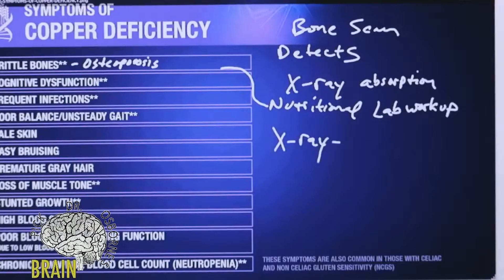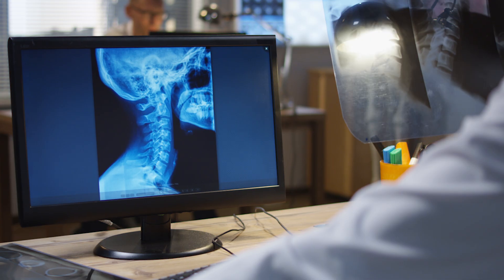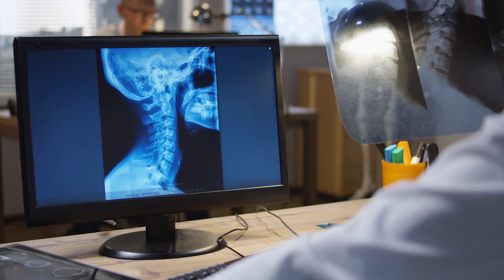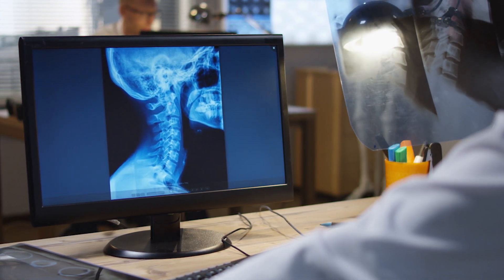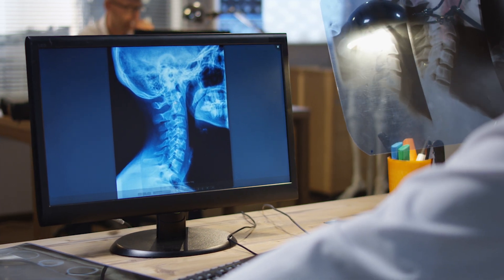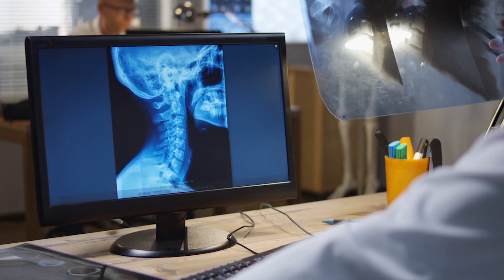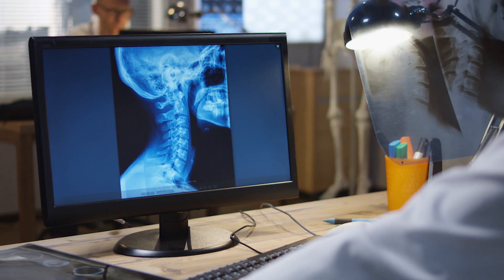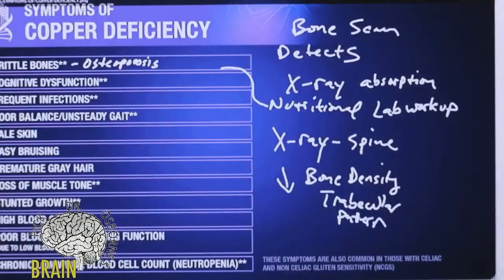X-rays of the spine can sometimes show reduced bone density. What doctors will look at on an x-ray is called the trabecular pattern. If your trabecular pattern looks like there's bone loss, it can be a better detection for quality of bone.